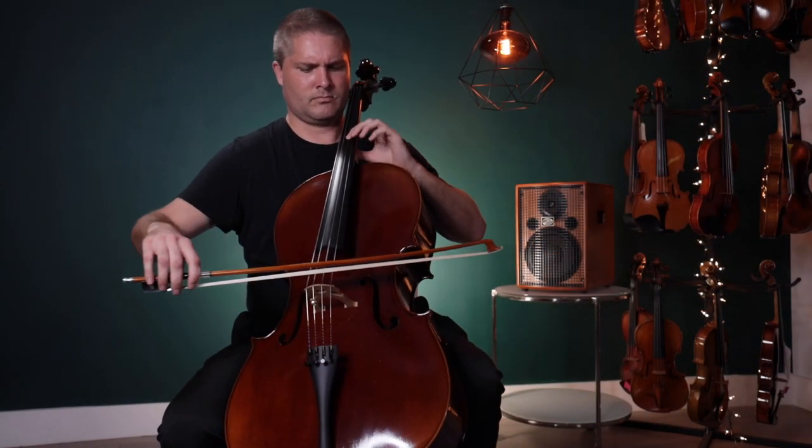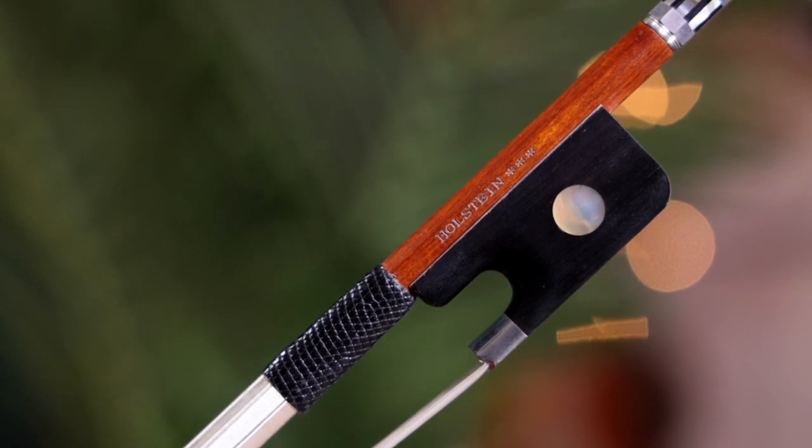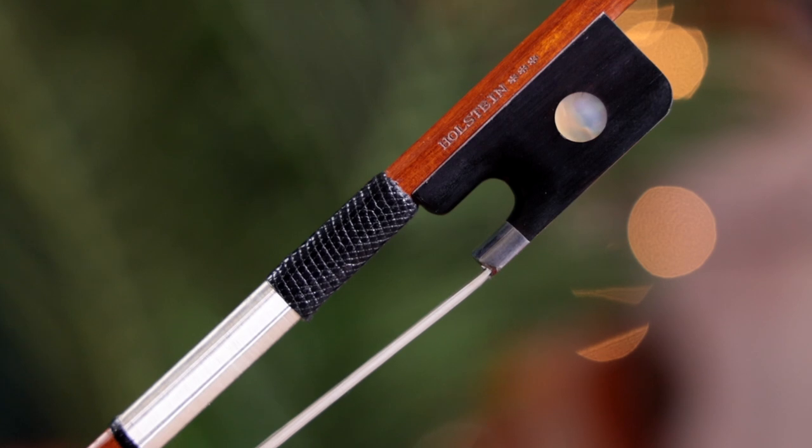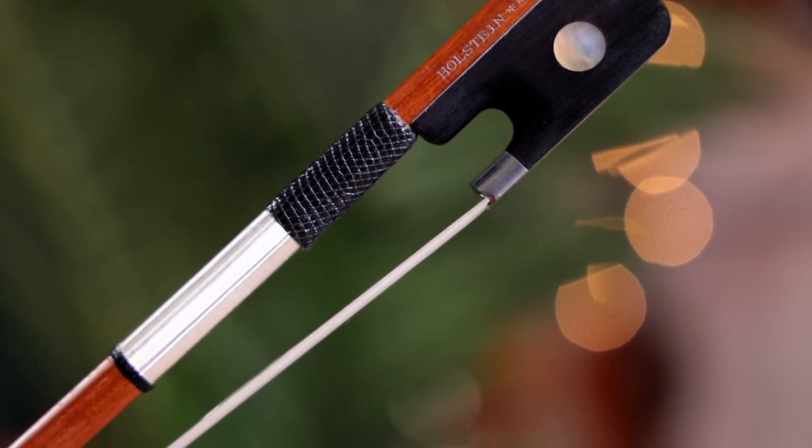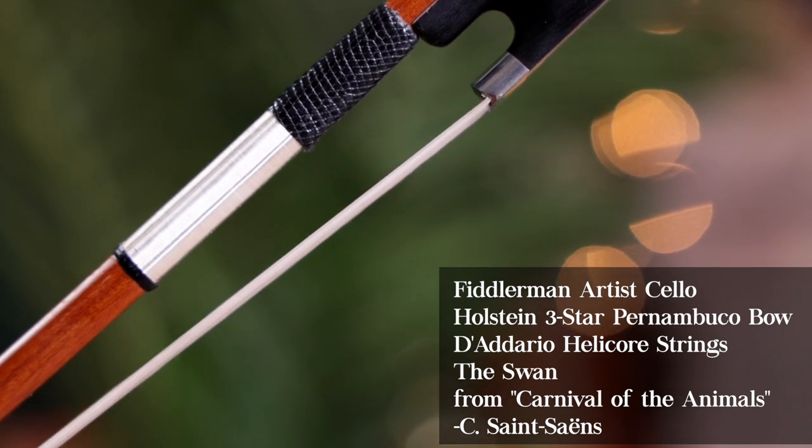The Holstein 3 Star Pernambuco bow is our highest quality bow and delivers the finest playing experience for advancing cellists. Pernambuco is the most sought-after wood type for players of all abilities and styles.